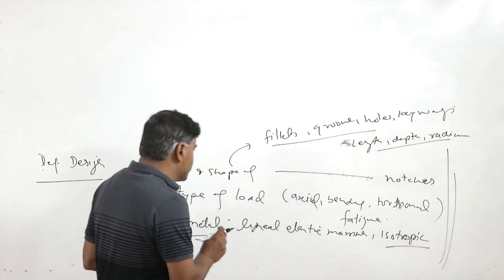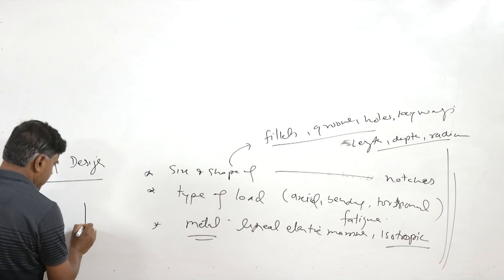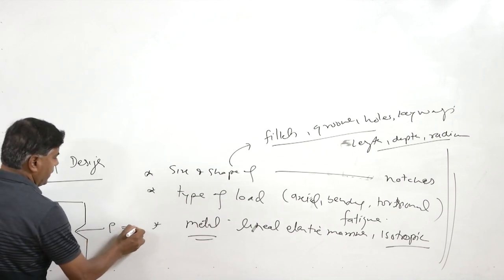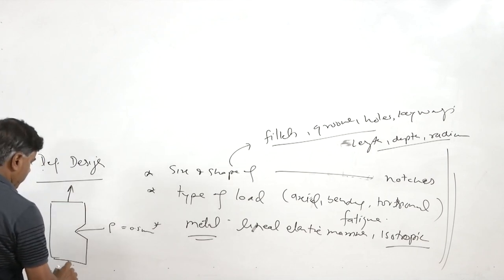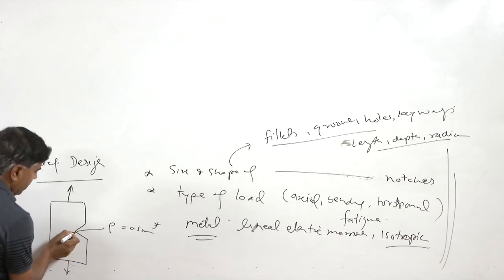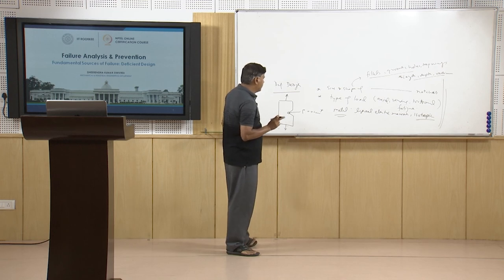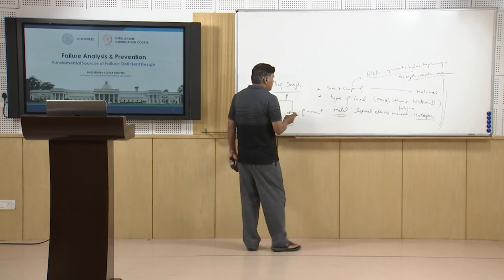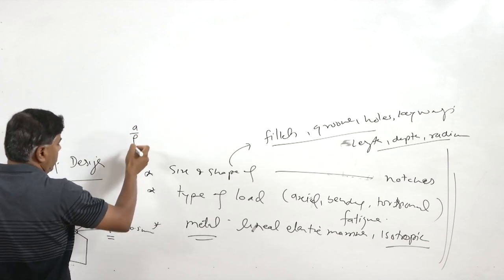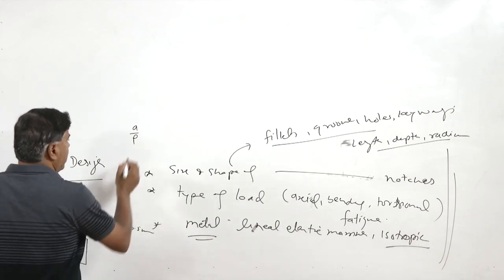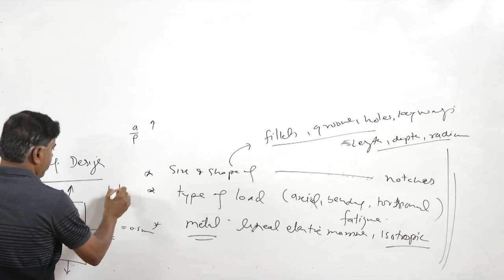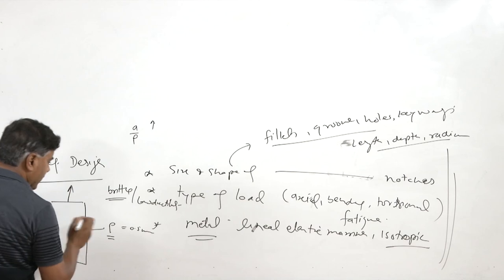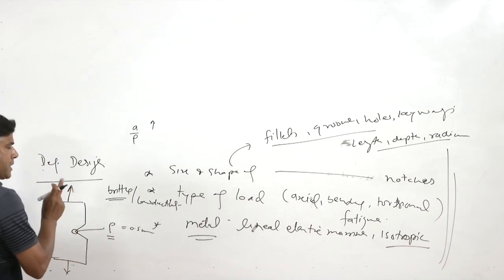Consider a component having a notch with a crack tip radius of 0.5 mm subjected to external load. Stresses will be more localized near the tip of the notch or crack. Since the radius of the crack tip directly affects the maximum magnitude of stresses — because stress concentration is proportional to the length divided by the root of the crack tip radius — a finer radius gives greater stress concentration. If the material is brittle and of low ductility, under external load conditions the crack tip does not blunt, it remains sharp and so stress concentration remains high.